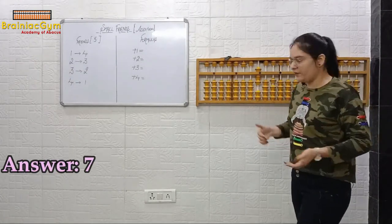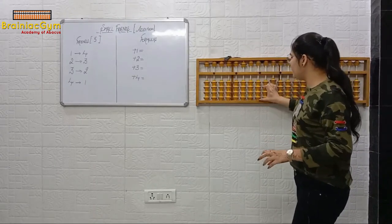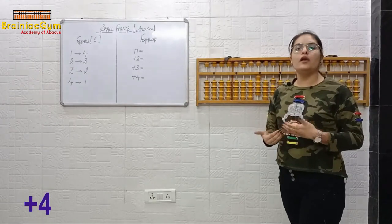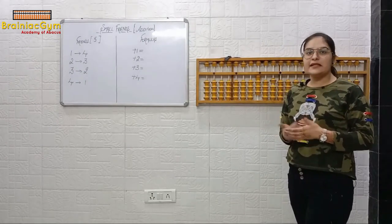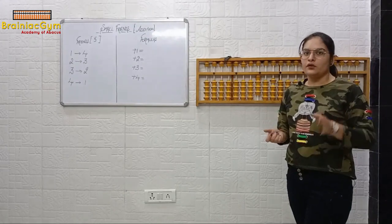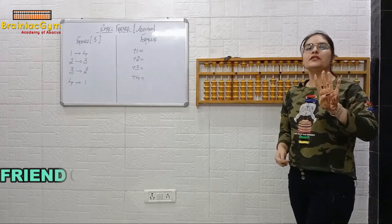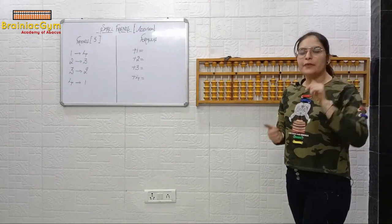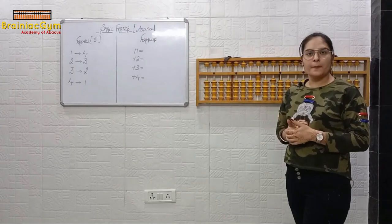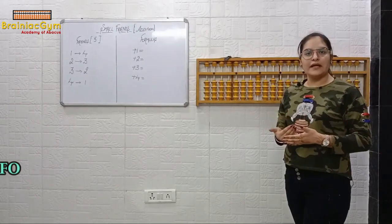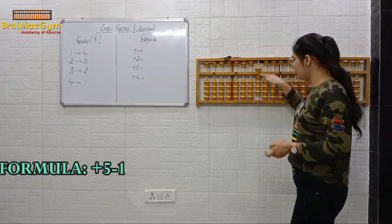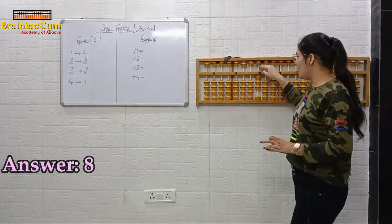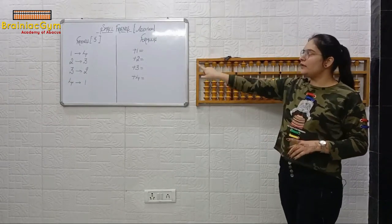Let's take one more example. We have four again and we have to do plus four. So for plus four, whose friend will we look at? Four's, because we have to do plus four. Friend of four is one, and total small friends is five. So what will be the formula? Plus five minus one. Answer is eight. I hope this is clear.